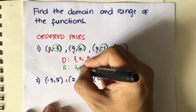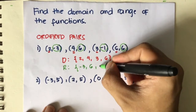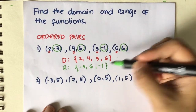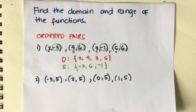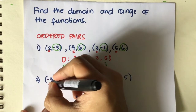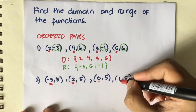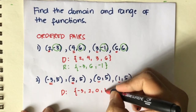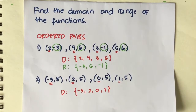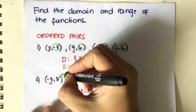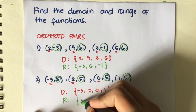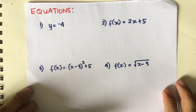So we have negative 3, positive 6, negative 1, and 6 — but we just write 6 once. In the second set of ordered pairs, the x values or inputs are negative 3, 2, 0, and 1, so our domain is {-3, 2, 0, 1}. For the range, focus on the y coordinates — the value of y is just 5, so the range is {5}.